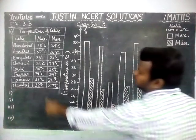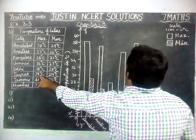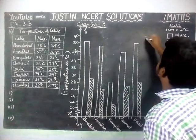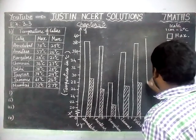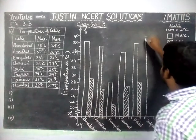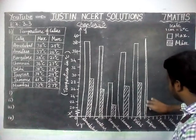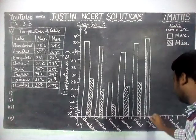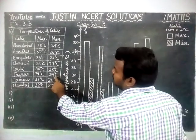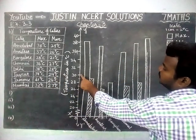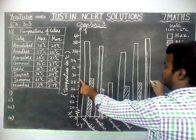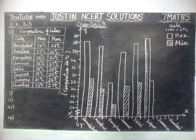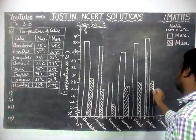Next city is Jaipur. Maximum is 39°C. We have 38 and 40, so in between is 39 — we draw the bar there. Minimum temperature is 29°C. Between 28 and 30, this point is 29. To show the difference we use the cross line.